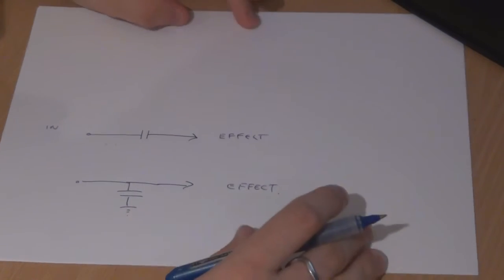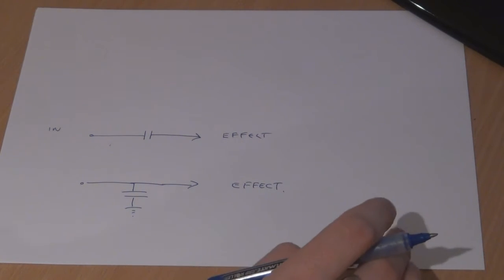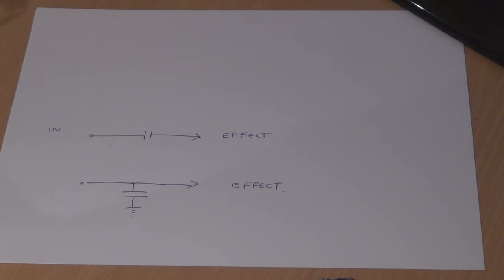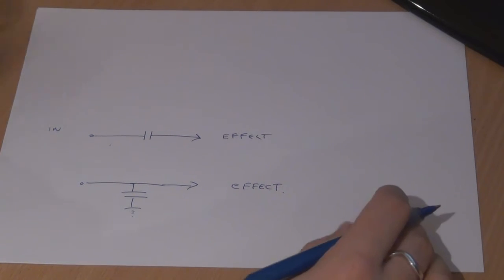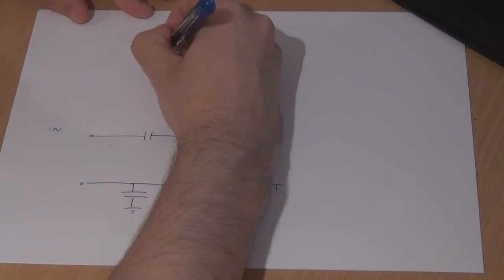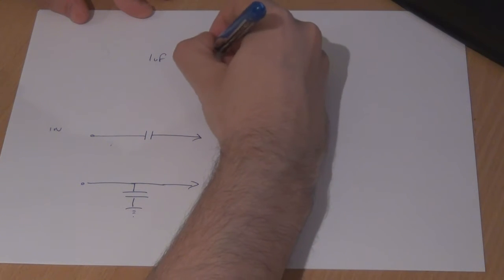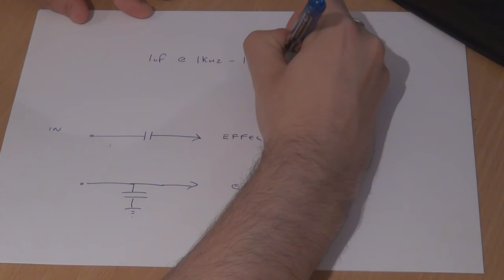A good thing to do is check out a reactance calculator — something I've done recently to get my head around how this actually works. If we plug in, say, one microfarad and one kilohertz, it tells me the resistance is 160 ohms. So: one microfarad at one kilohertz equals 160 ohms — that's the reactance.